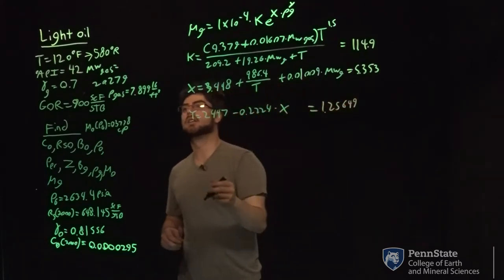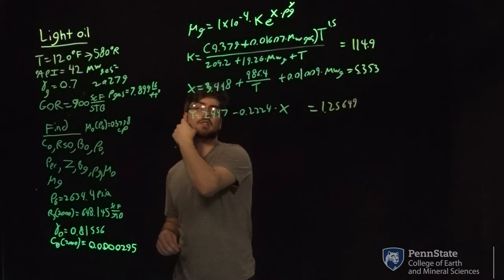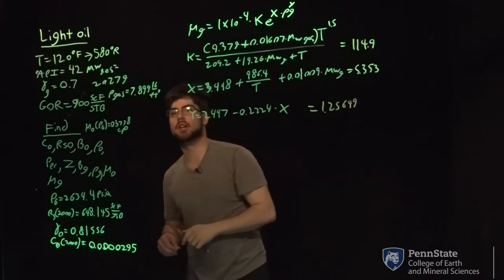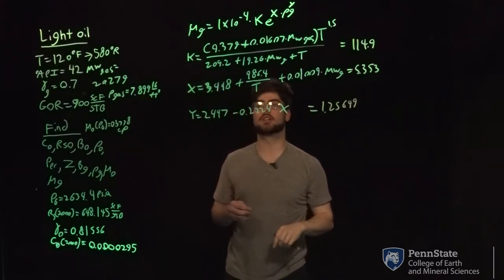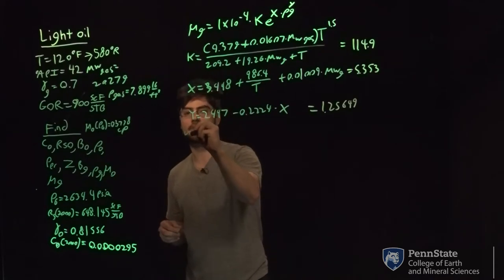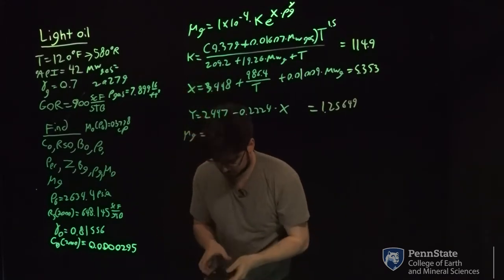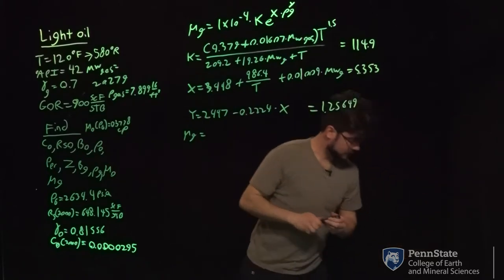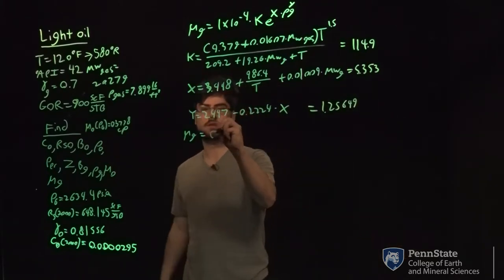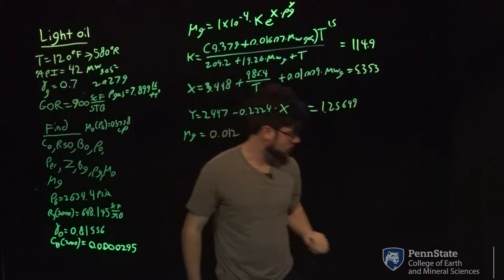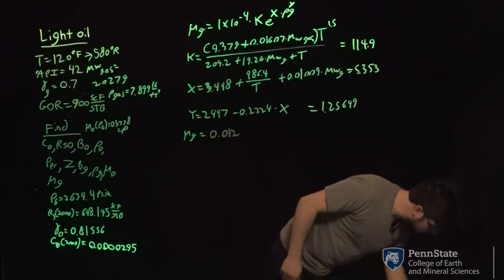Plugging these in. Density of gas for this is at 2,000 psi by the way. Forgot to write it down, but that's what it was that we found earlier. So then we can find our viscosity of our gas. Our gas viscosity should be 0.01298.